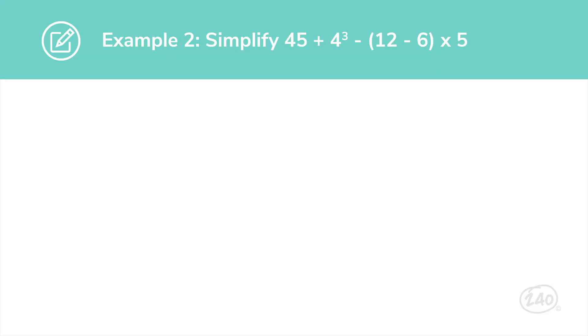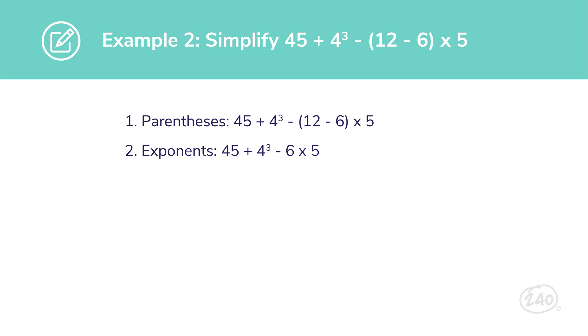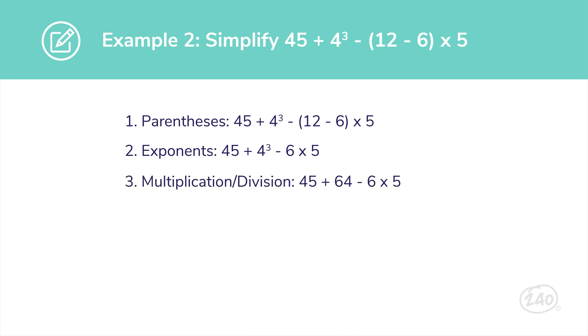Let's look at an example from our study material of a problem type you're likely to see on your test. Simplify the expression 45 plus 4 cubed minus the quantity of 12 minus 6 times 5. Enter PEMDAS. We use PEMDAS to know which order to follow as we work through the problem. First, we look at parentheses: 12 minus 6 equals 6. Then we move on to exponents: 4 cubed equals 4 times 4 times 4, which is 64. Then multiplication and division: 6 times 5 equals 30.